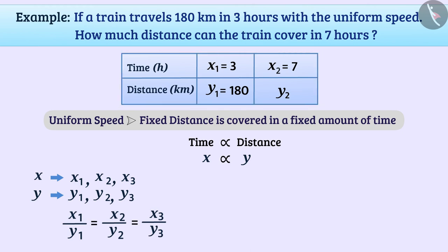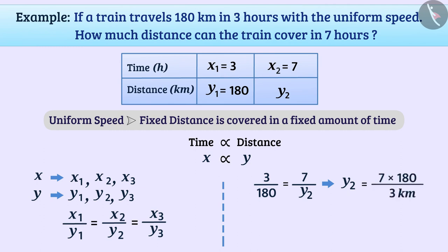So, for the given situation, we can write 3/180 = 7/y2, that is y2 = (7 × 180) / 3 kilometers, which is equal to 7 × 60 kilometers, which is equal to 420 kilometers. That is, the train will cover a distance of 420 kilometers in 7 hours.